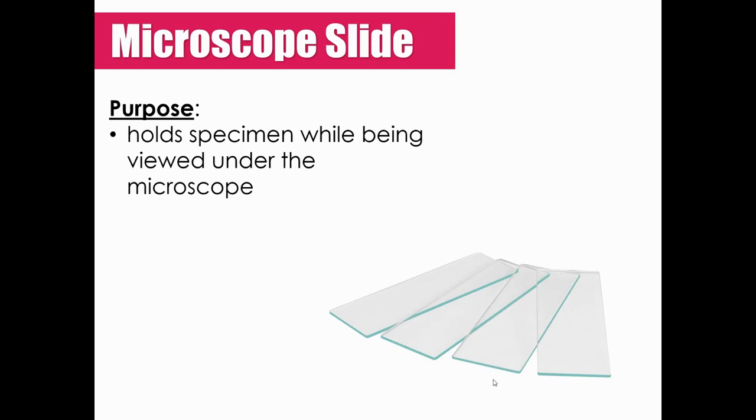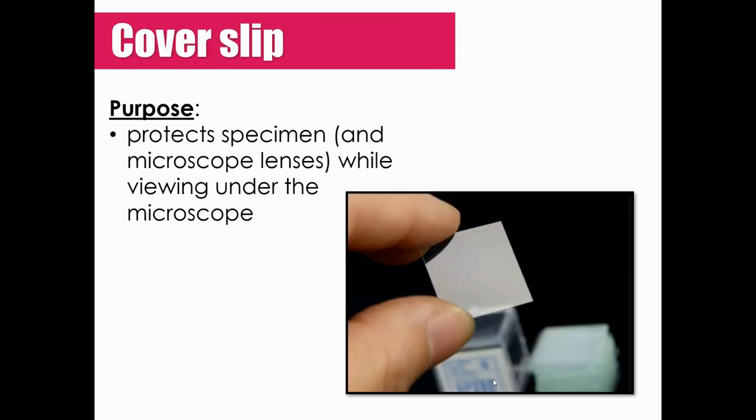Now with a microscope, we're going to need something to hold this specimen that we're trying to enlarge. And that's going to be a microscope slide. So microscope slides come in plastic. They can come in glass. We'll use both this year. And we're going to put whatever specimen we want to enlarge on the microscope slide. And then we're going to cover it with something called a cover slip. Again, cover slips can come in both plastic and glass. Again, we will use both this year. But the cover slip protects the specimen and our microscope lenses from getting scratched. And they all kind of work together to magnify the object.